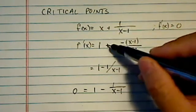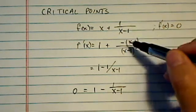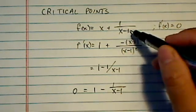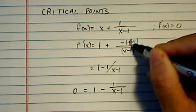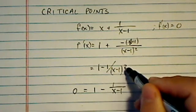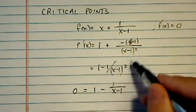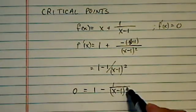Derivative of 1 plus, derivative of the first one is 0, minus, leave the first one, derivative of the second one. Oh, I got it, this one wrong, it's actually just a 1 here. That's minus 1 squared. Minus, there's a square here. That's what I was missing.